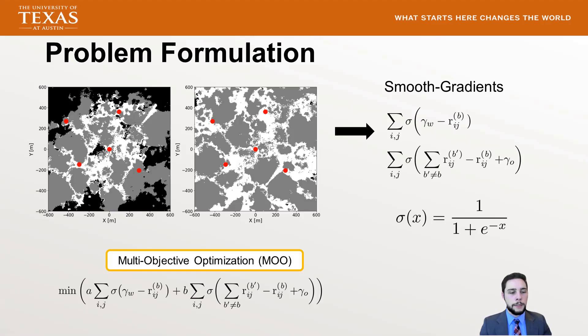The end goal is a multi-objective optimization where we minimize a scaled version of over coverage and under coverage. We don't specify what A and B are yet, because in our Bayesian optimization we don't need to — only for DDPG do we need to provide these as a convex combination in order to explore the Pareto frontier.